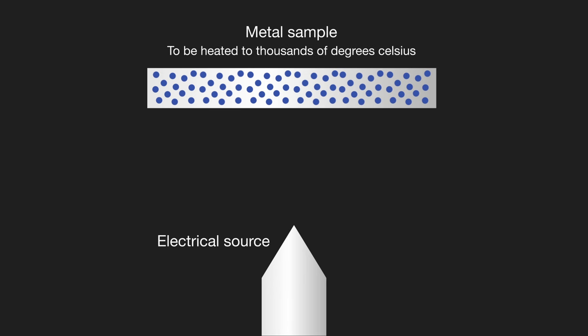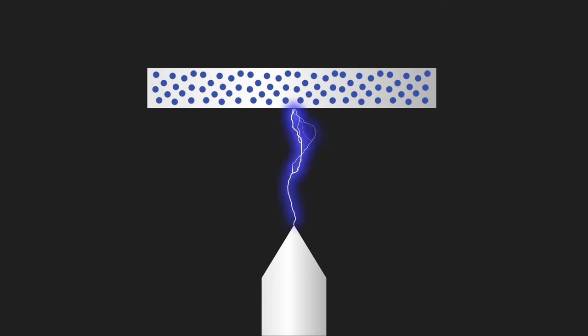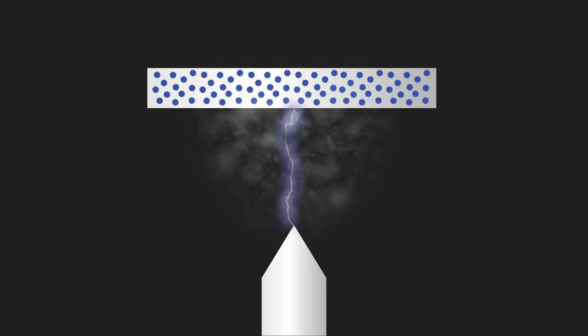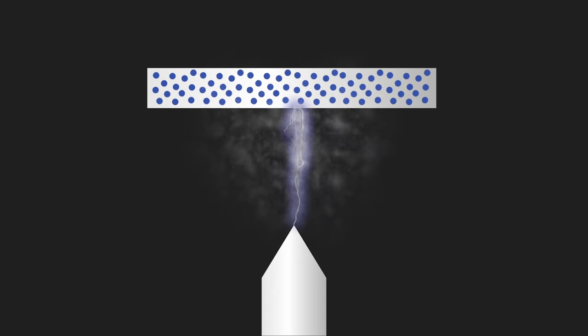This is done using an electrical high voltage source in the spectrometer via an electrode. The difference in electrical potential between the sample and electrode produces an electrical discharge. This discharge passes through the sample, heating and vaporizing the material at the surface and exciting the atoms of the material, which then emits the element characteristic emission lines.